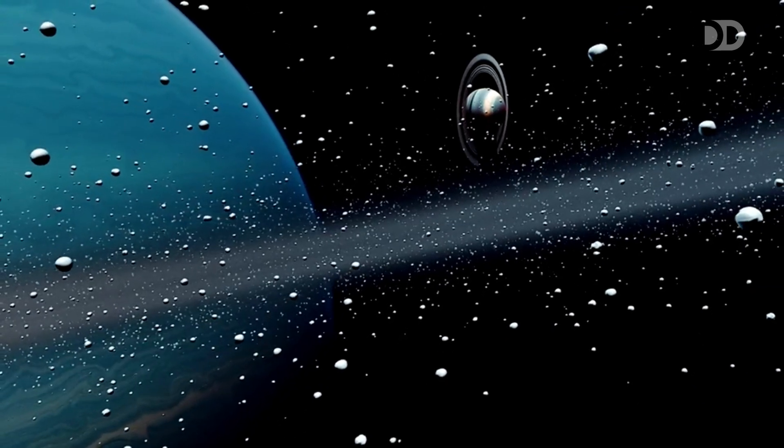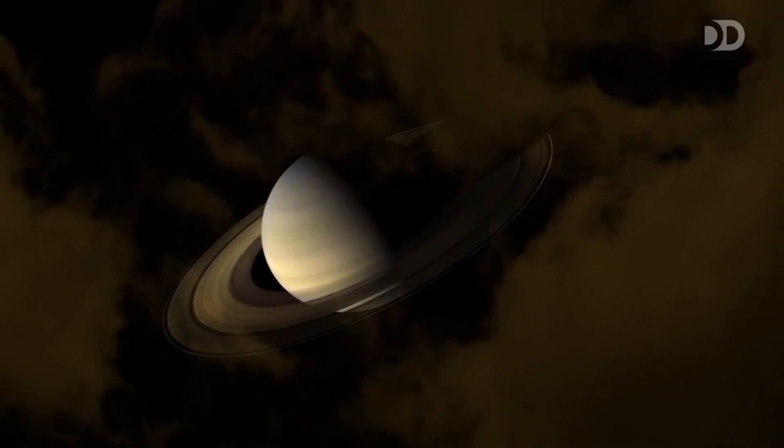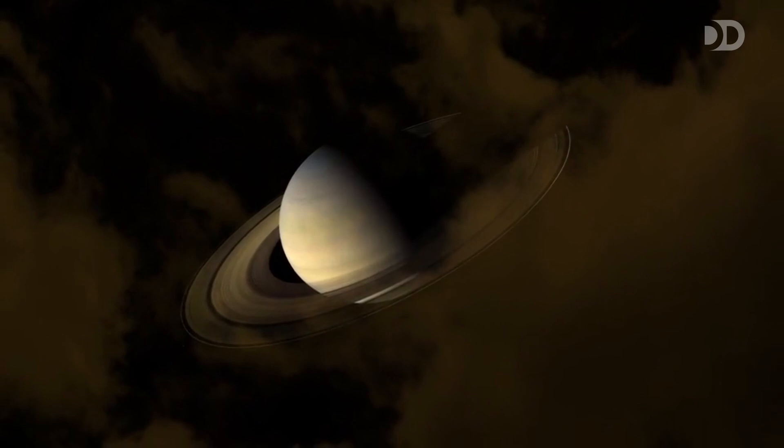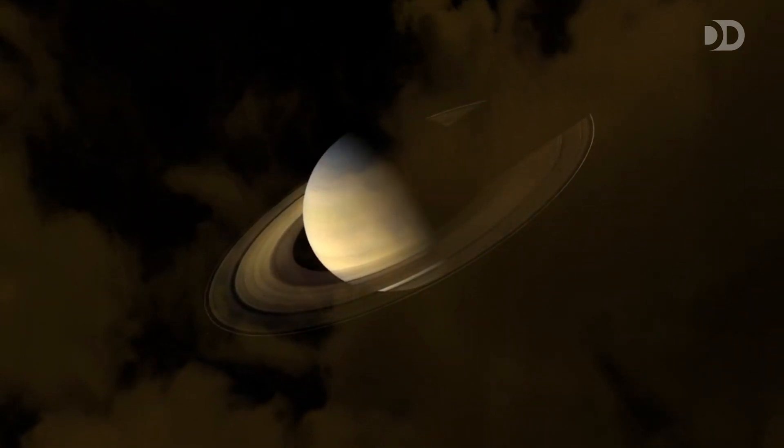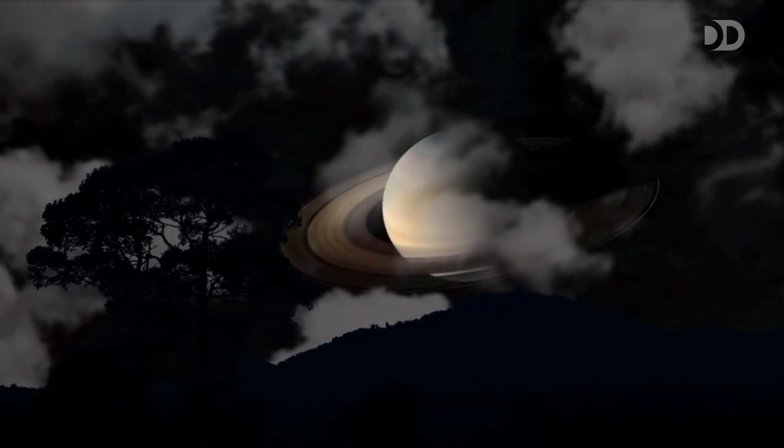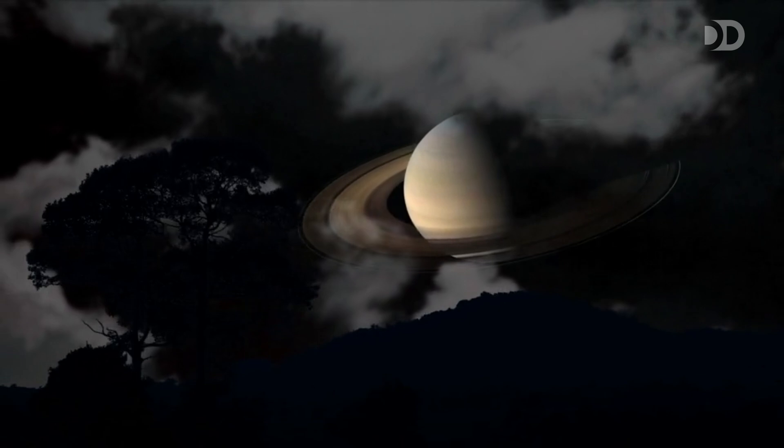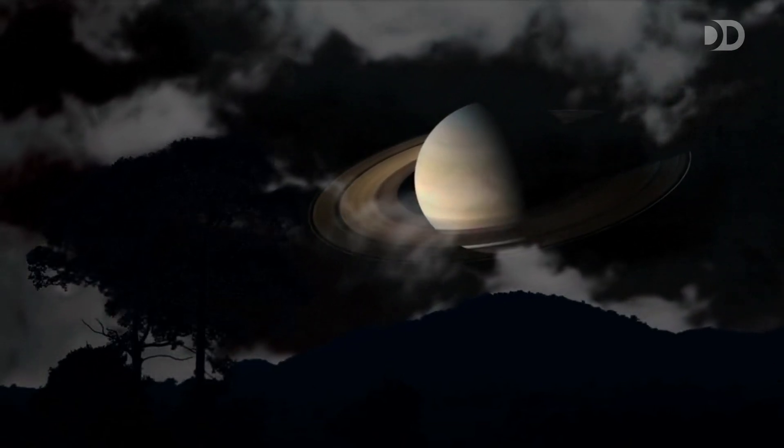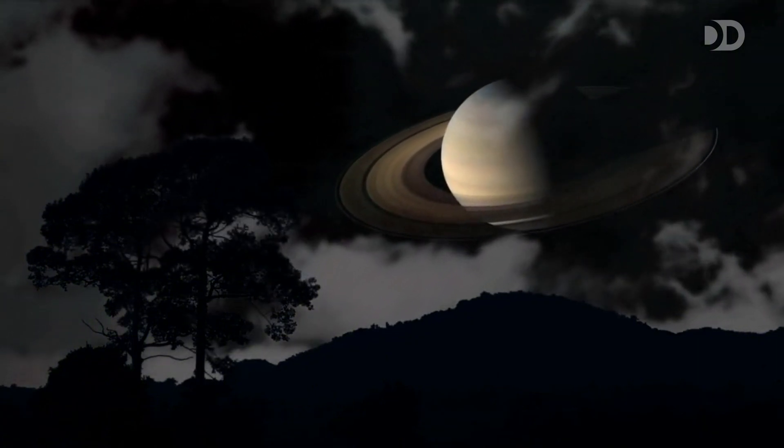Saturn's atmosphere is turbulent, with winds reaching over a thousand miles per hour. Massive storms rage across its surface, including the famous hexagonal storm at its north pole, a mysterious, six-sided jet stream that has puzzled scientists for decades. The planet's golden clouds are made mostly of hydrogen and helium, swirling in mesmerizing patterns.